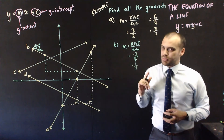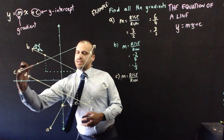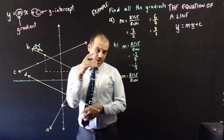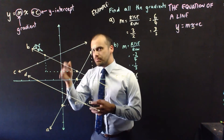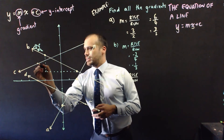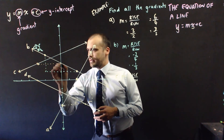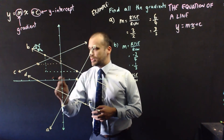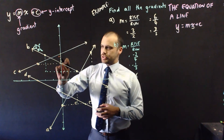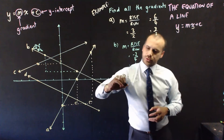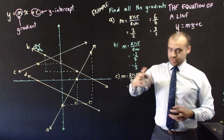What about C? Again, m equals rise over run. You can see that C is sloping upwards, so it's going to have a positive gradient. Using the points shown: 3 across and 1 up. m equals rise over run — 1 up over 3 across. The gradient is one-third.